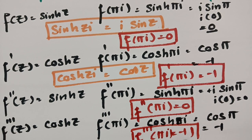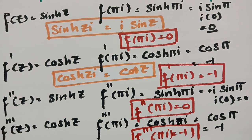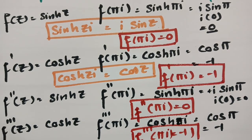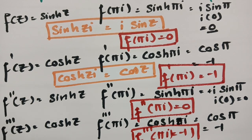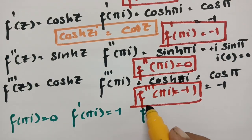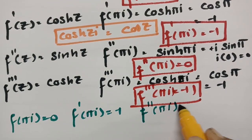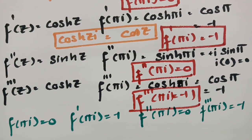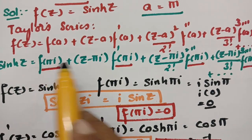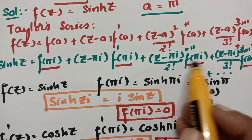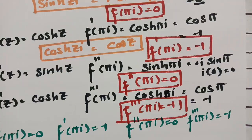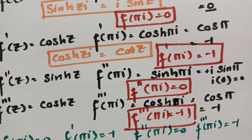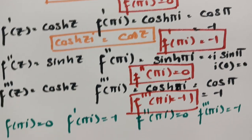So to summarize the values: f(πi) = 0, f'(πi) = -1, f''(πi) = 0, and f'''(πi) = -1. Now we substitute all these values into the Taylor series expansion.